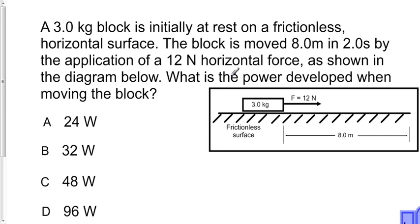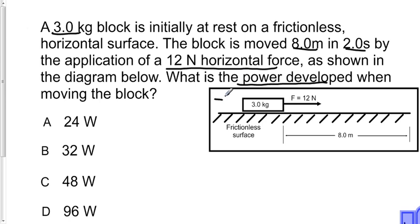This problem asks us to find the power developed when a 3 kilogram block is moved 8 meters in 2 seconds by a 12 Newton horizontal force, as illustrated in the diagram below.